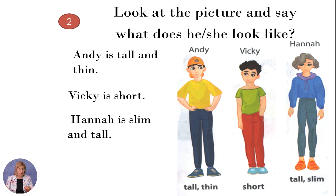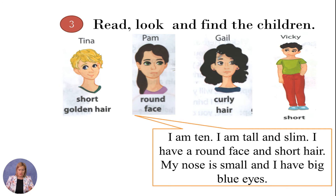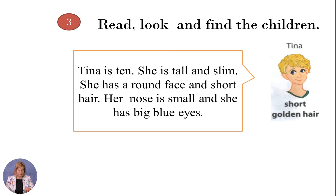Now it is time to practice reading. Let's read the description. Look at the picture and find the child. 'I am 10. I am tall and slim. I have a round face and short hair. My nose is small and I have big blue eyes.' The answer is Tina. Tina is 10, she is tall and slim, she has a round face and short hair, her nose is small and she has big blue eyes.